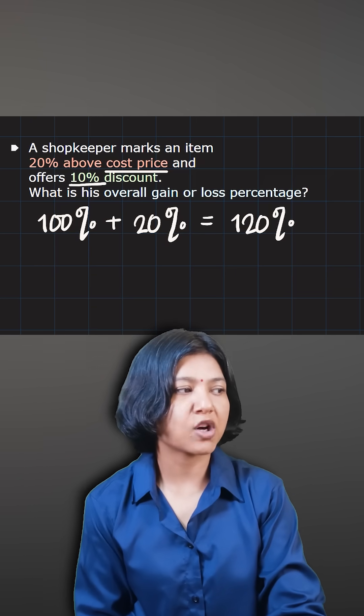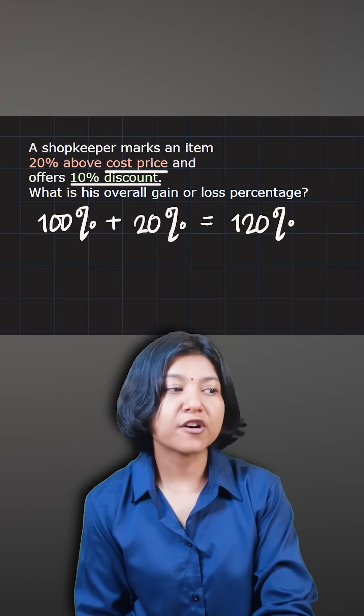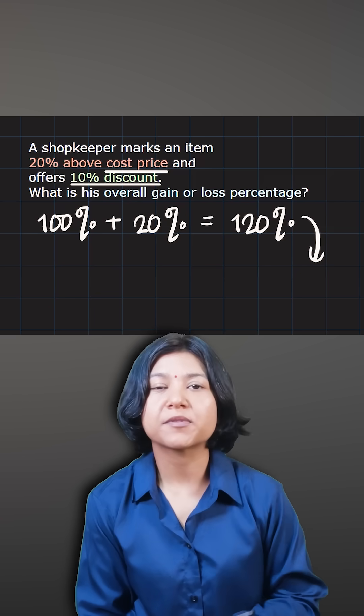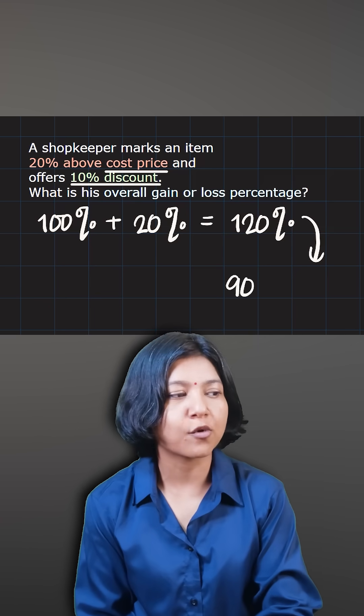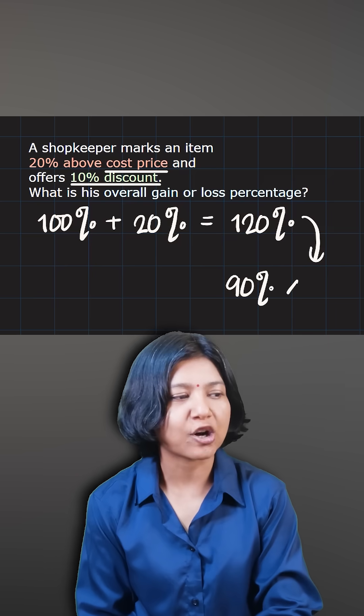So plus 20% which means you want to mark the price as 120% of what you have paid. And now at the same time you are offering a discount of 10%. So when you offer a discount of 10%, the shopkeeper is going to pay only 90%. So what you really need to do is you want to find out the 90% of 120.